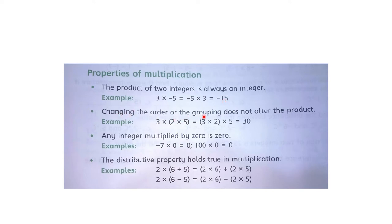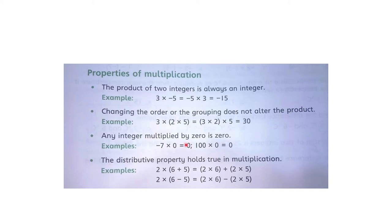Changing the order or the grouping does not alter the product. Example: 3 into 2 into 5. Group 2 aur 5 ka banao: 2 fives are 10, 10 ko 3 se multiply karo — 30. Group 3 aur 2 ka banao: 3 twos are 6, 6 ko 5 se multiply karo — 30. Donon surton mein answer 30.